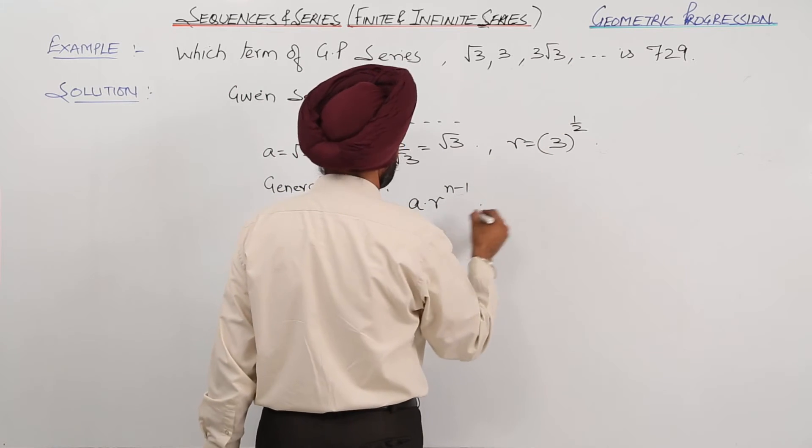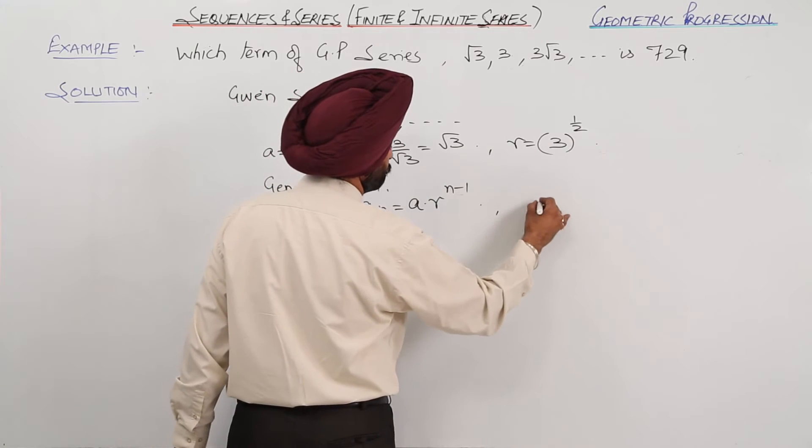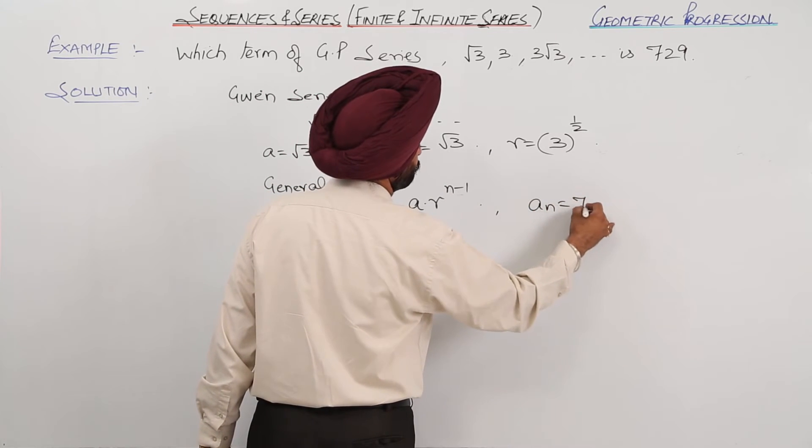Which term is, sorry, 729? So a_n is 729.